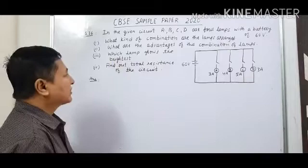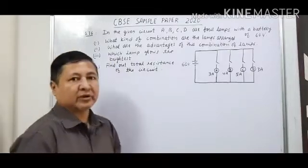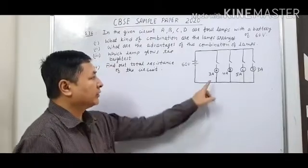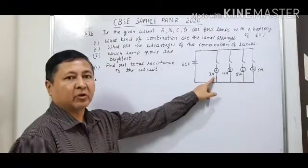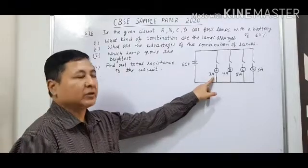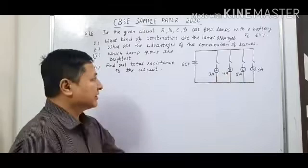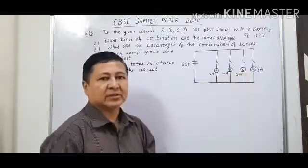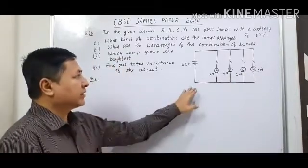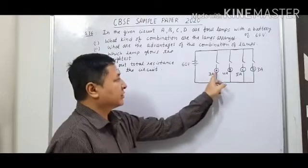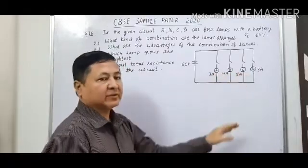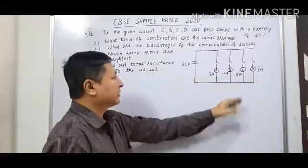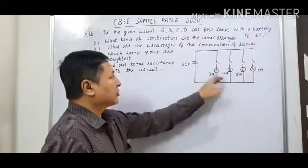The advantages of parallel combination: the first advantage is that if one lamp is faulty, it will not affect the working of the other lamps. If lamp A is faulty, lamps B, C, and D can still work. The second advantage is that all lamps ABCD will get the same potential difference as the battery, that is 60 volt.